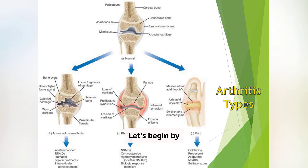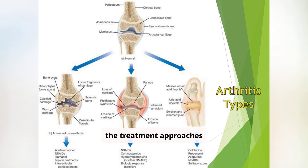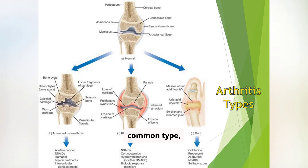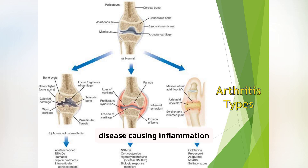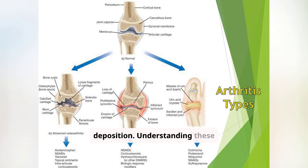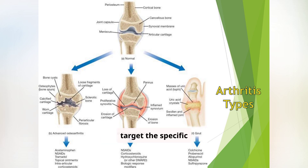Let's begin by differentiating between the major types of arthritis. While they all cause joint pain, the underlying mechanisms and therefore the treatment approaches differ significantly. We'll look at osteoarthritis, the most common type, characterized by cartilage breakdown. Then we'll examine rheumatoid arthritis, an autoimmune disease causing inflammation of the joint lining. Finally, we'll discuss gout, caused by uric acid crystal deposition. Understanding these distinctions is paramount because the medications we choose will target the specific pathological processes involved in each type of arthritis.